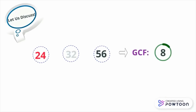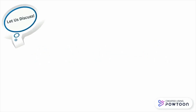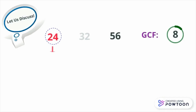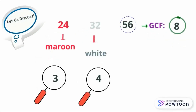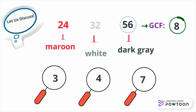Let us discuss further. 8 is the GCF — the largest number of arrangements. You may wonder how many maroon balloons will be in each arrangement. Divide 24 by the GCF 8; the answer is 3, meaning 3 maroon balloons per arrangement. Dividing 32 by 8 gives 4 white balloons. Dividing 56 by 8 gives 7, meaning 7 dark gray balloons in each group.